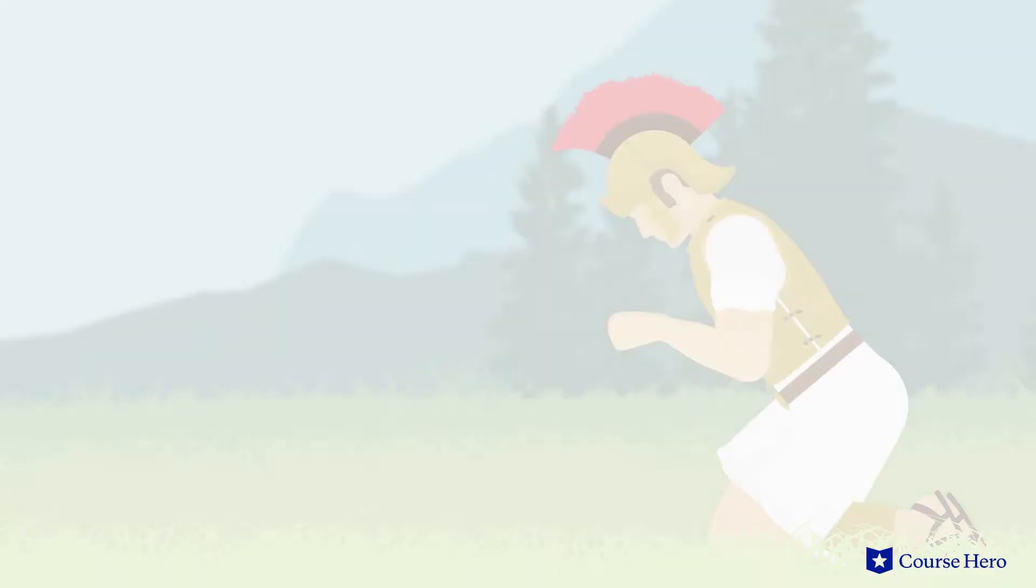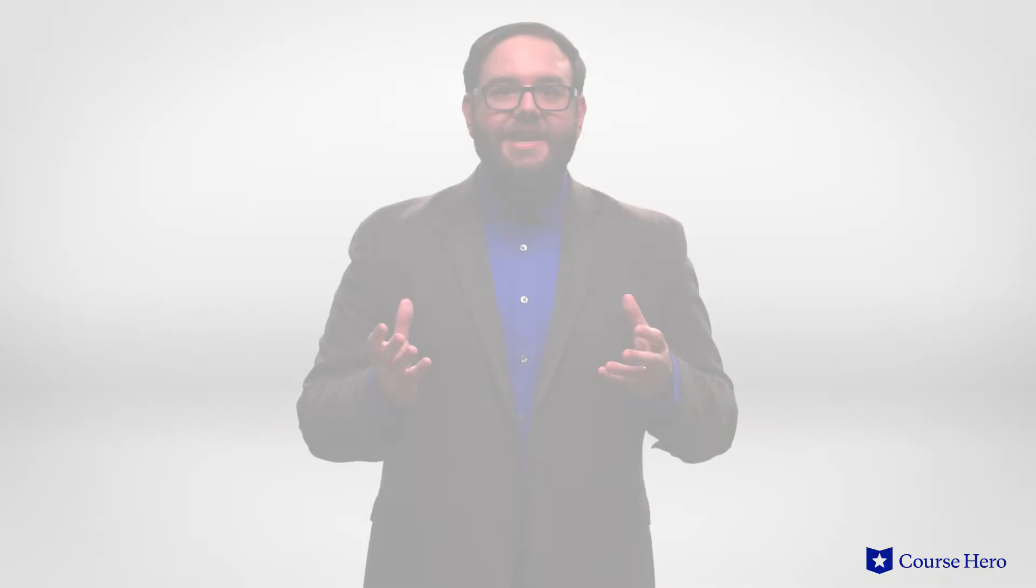However, Virgil gives him human faults as well. At times, Aeneas is unsure or conflicted, and he can get carried away by his feelings.